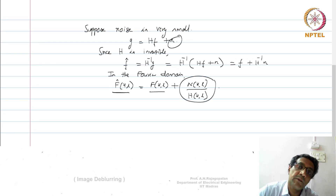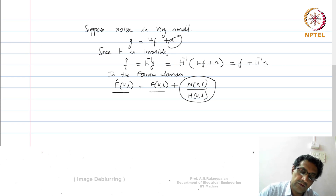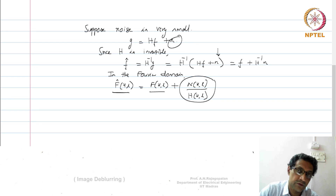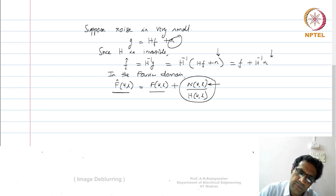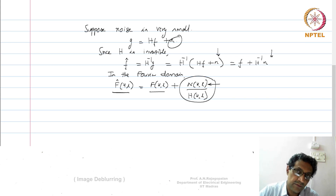If the error had been just N(KL), we would have been happy, because noise is very small. Unfortunately it is N(KL) divided by H(KL). Even if noise is small, because G equals HF plus N had to be brought in and noise is not zero, some small noise exists. When you are driving the solution, you get N(KL) divided by H(KL), and H(KL) is not something arbitrary — H(KL) is really a blurring function.